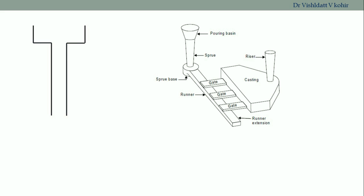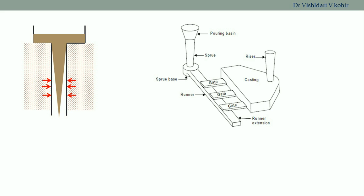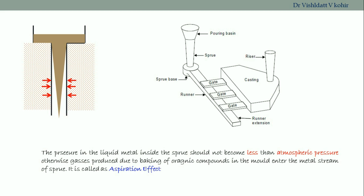Let's consider a sprue which is cylindrical in shape. When we allow the molten metal to pour from the pouring basin to the sprue in a free manner, it will follow a V-type of flow. There is a gap between the walls of the cylinder and the metal flow, which leads to a vacuum pocket. Since the sand around the sprue is a permeable material, gases and air generated by baking of organic material present in the mold will enter into the metal stream, leading to defective casting. So the pressure inside the sprue should not be less than the atmospheric pressure — this effect we call the aspiration effect.